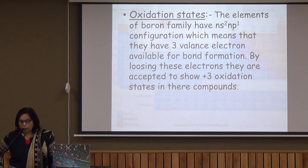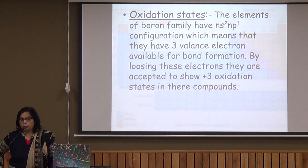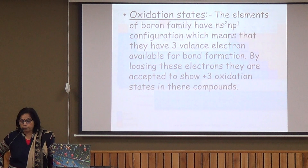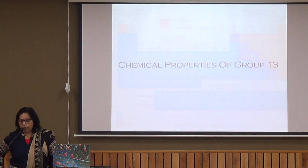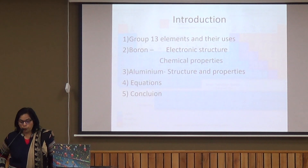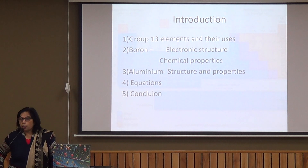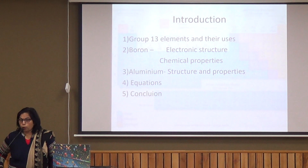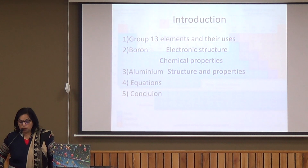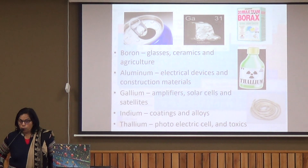The oxidation state: since the outer configuration is NS2 NP1, the general oxidation state is +3. Coming to the chemical properties of group 13 — boron shows different properties than other elements because of its very small size. In this group, boron is not a metal; the other elements are metals, but boron is a non-metal because its size is very small.